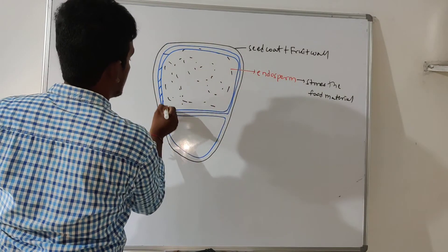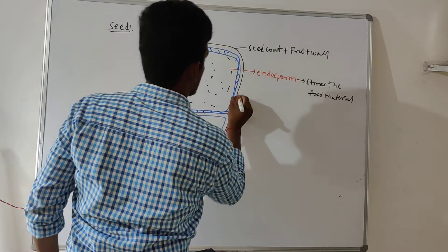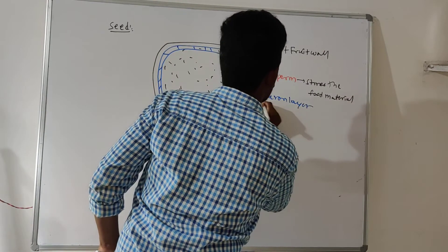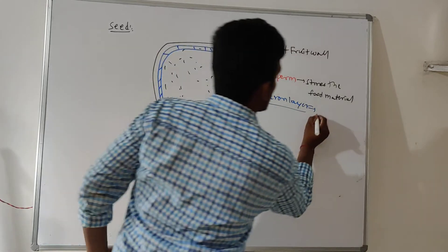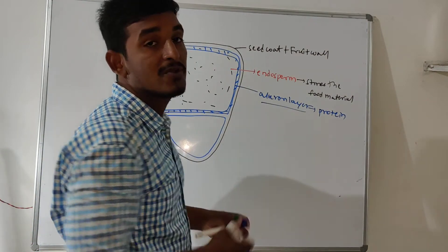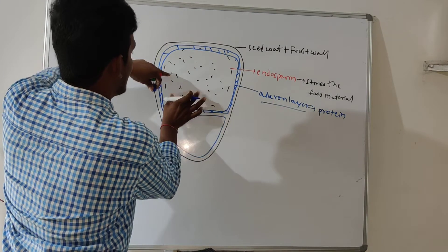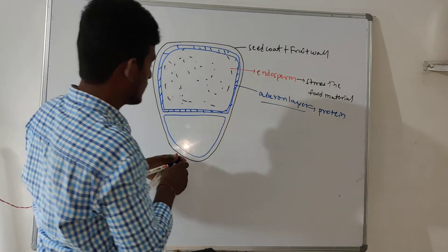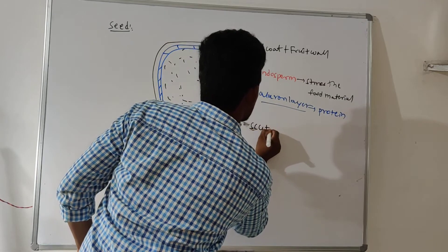That separating layer is called the aleurone layer. The aleurone layer is made up of protein — it is a proteinaceous layer. Its main function is active during seed germination. The single cotyledon in monocotyledons is called the scutellum.